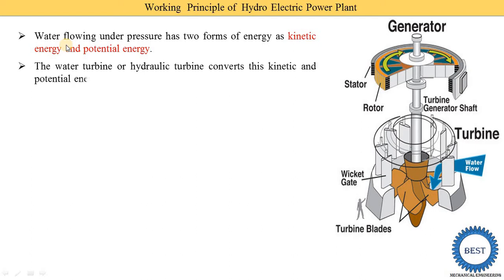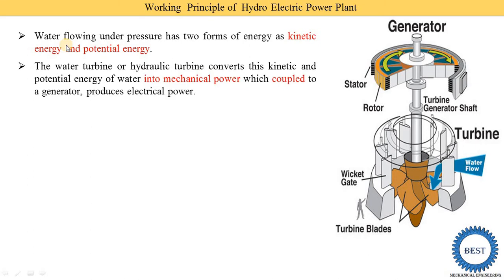The water turbine or hydraulic turbine is a device which converts kinetic and potential energy of water into mechanical energy. In a turbine, we supply water that has kinetic energy and potential energy. When this water strikes the turbine blades, the blades start to rotate — this is called mechanical energy. The shaft of the turbine is coupled to a generator.